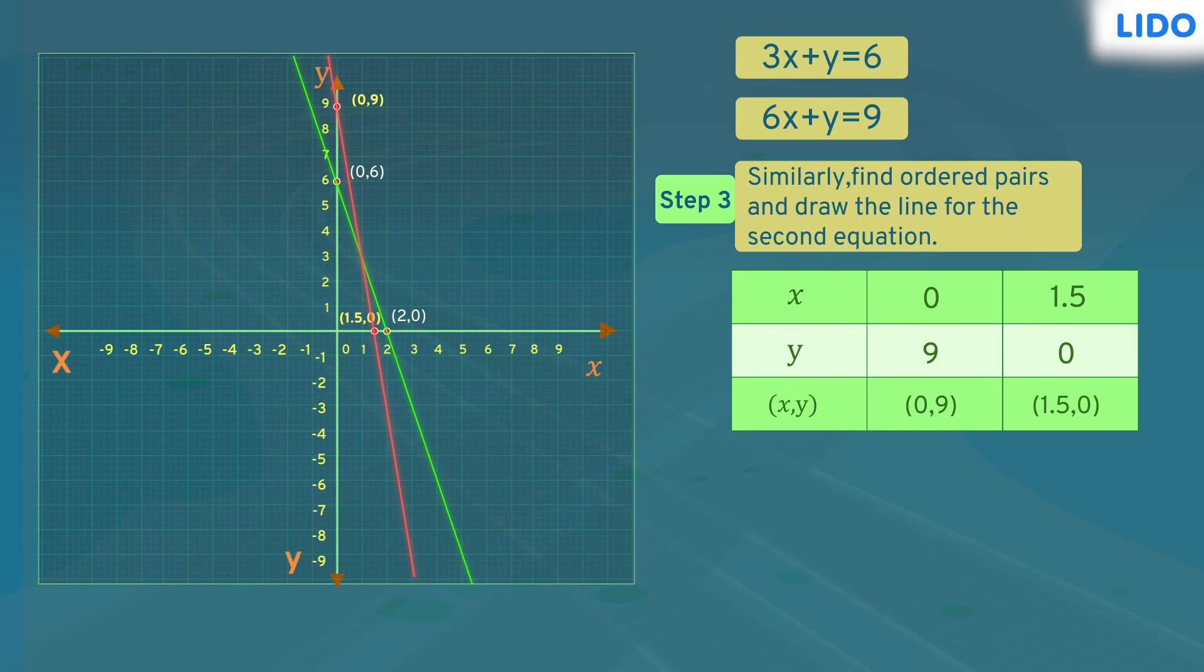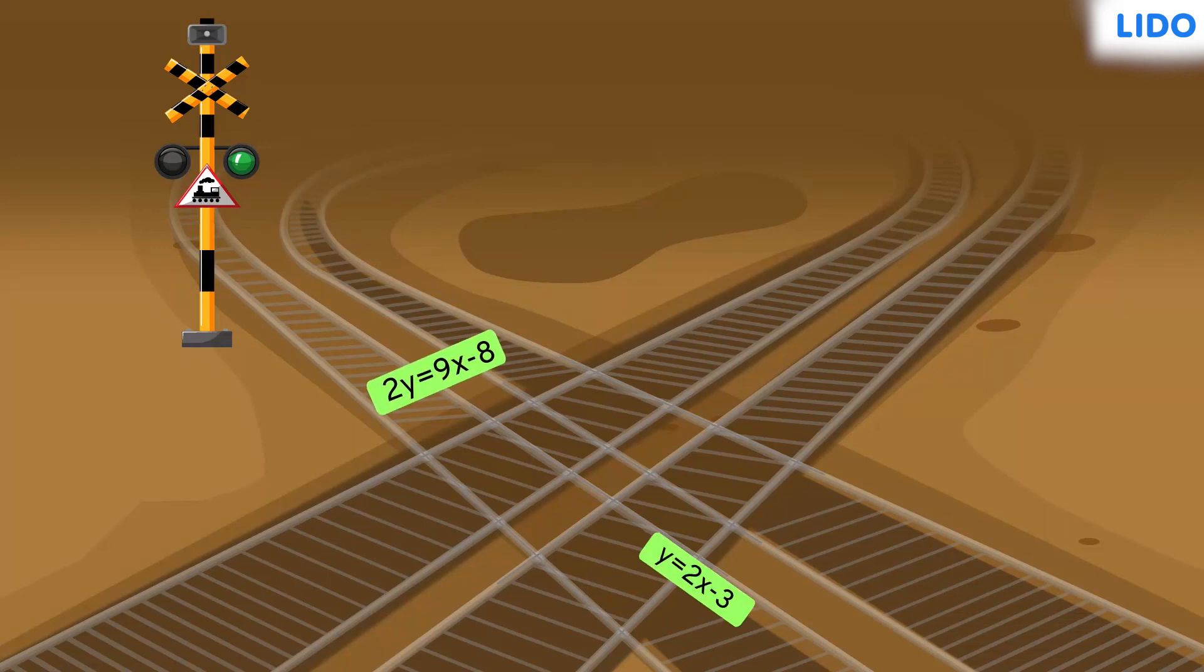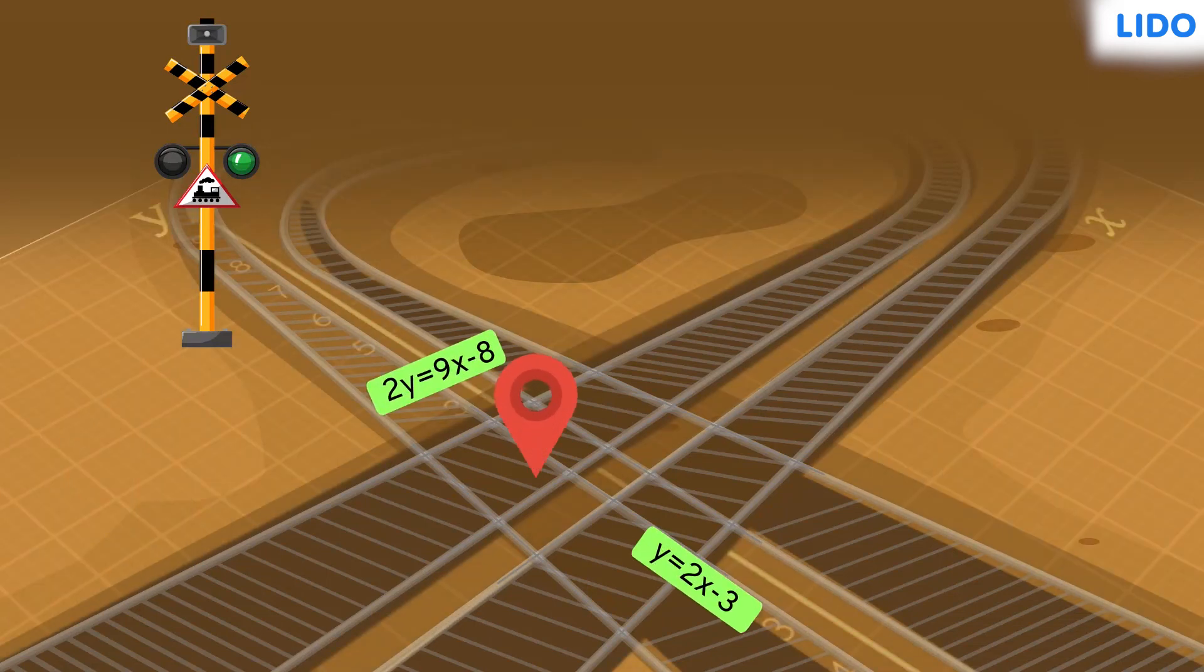Let's identify the meeting points of these lines. These two lines intersect at (1,3). That means this point satisfies both the equations. Hooray! We solved two simultaneous equations using the Cartesian plane. This would be helpful in finding the meeting points of the railway tracks as well.